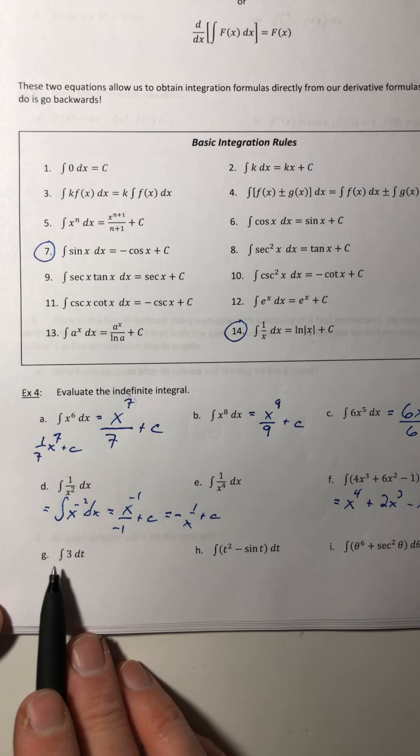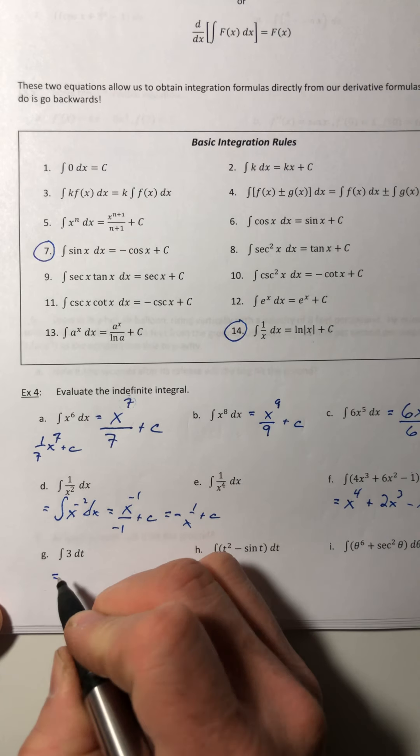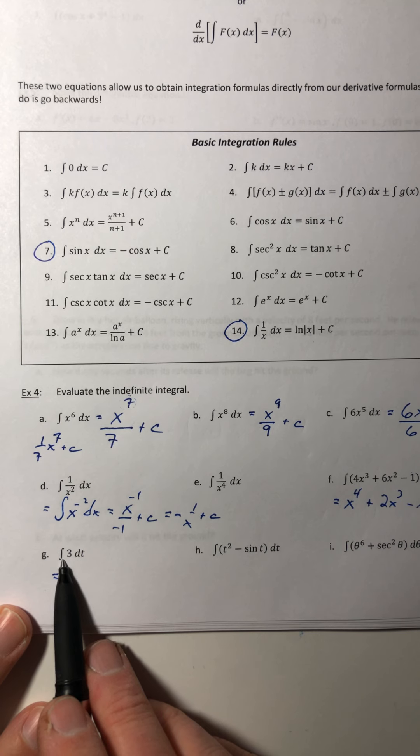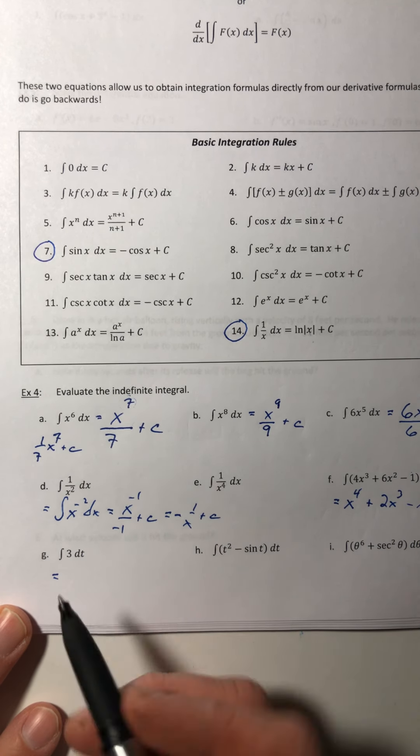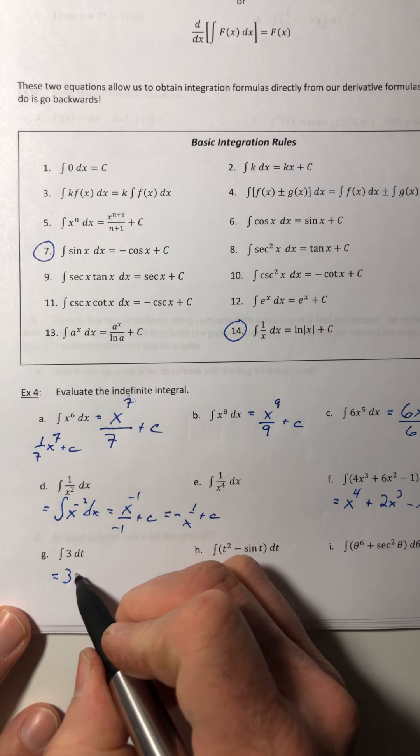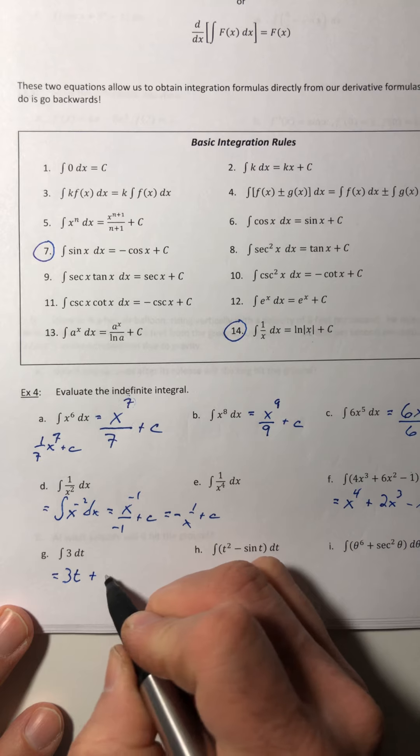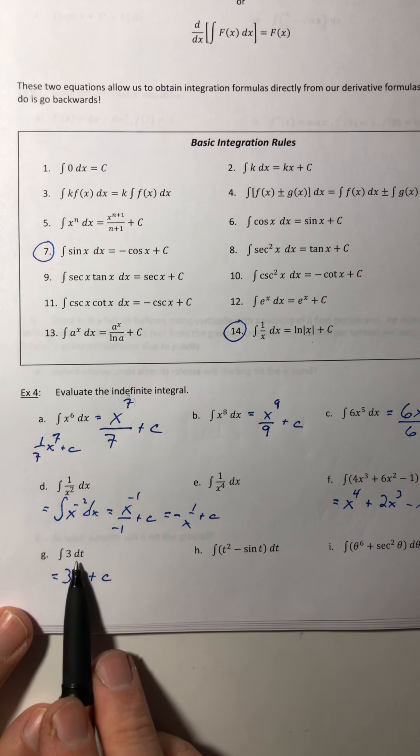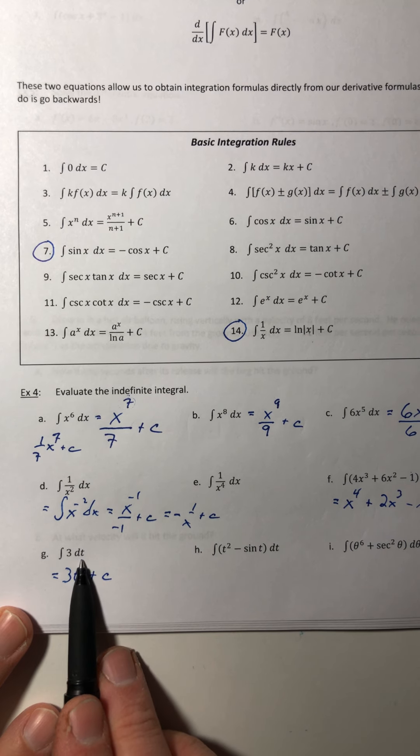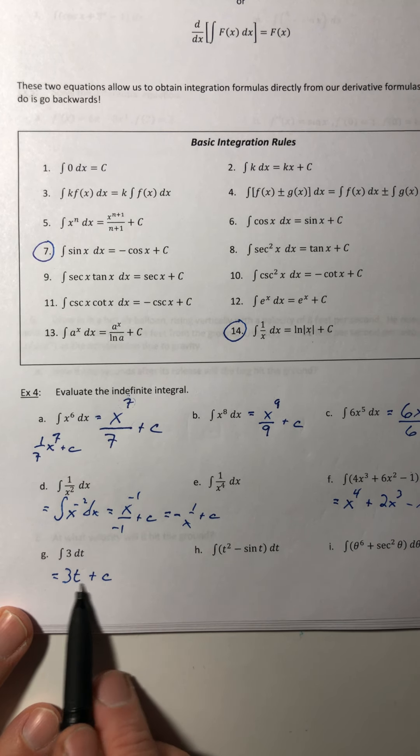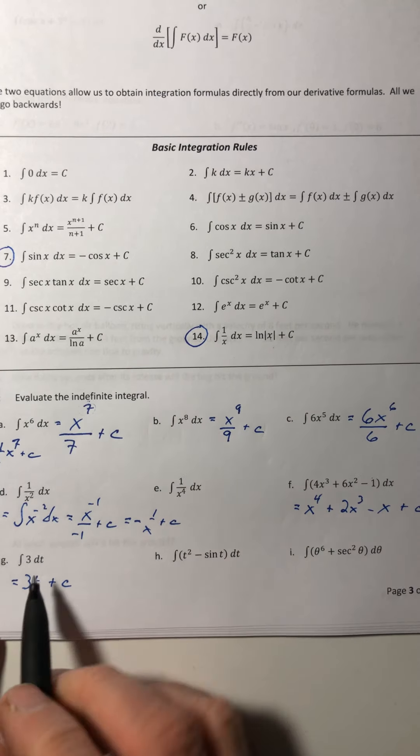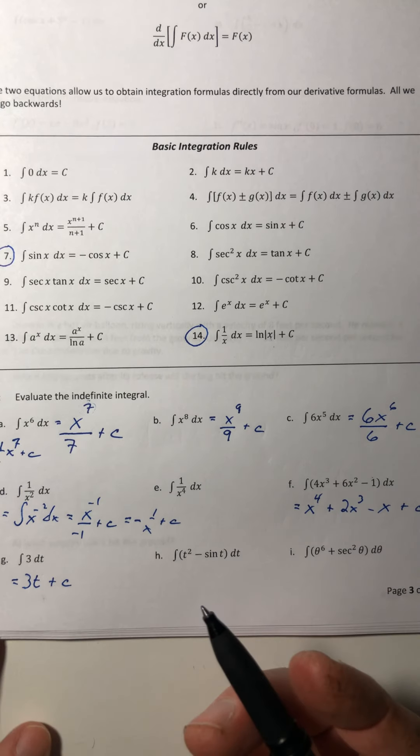All right, this one's a little interesting too because sometimes this trips people up. You're integrating just a constant, so remember that this is the derivative of something. So three is the derivative of three t, and then plus C. So how do we know it's a t there instead of an x? Well, because it says dt. So this right here, remember, that's your variable of integration, so that's the variable that's going to be in your answer. And yes, if you switch it to x, that would be incorrect.